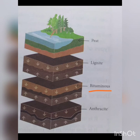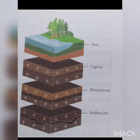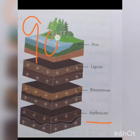Bituminous coal is formed when more layers of sand and silt compress the lignite. It is the most abundant type of coal and is also known as a household fuel. It produces more heat than peat and lignite, and its carbon content is about 75 to 80 percent. Anthracite is lustrous and black in colour and is the best type of coal. It is the hardest coal and produces more heat than any other type. It has the highest carbon content of 90 to 95 percent, a very high ignition temperature, and therefore burns slowly.